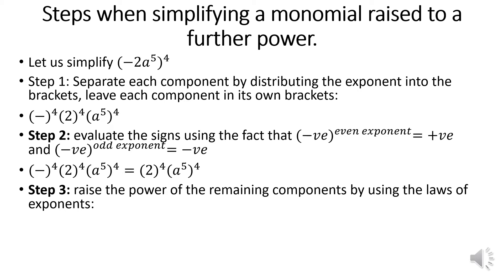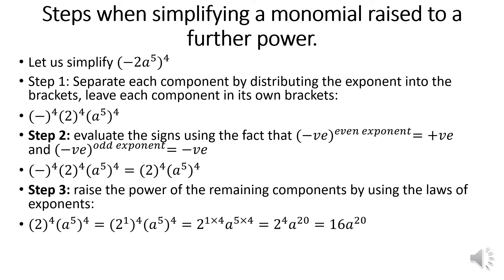Step number 3: we raise the power of the remaining components using the laws of exponents. We say 2 in brackets to the power of 4. Remember that 2 has an exponent of 1. We multiply the exponent by the exponent outside the bracket. So we raise the different components to the power of 4: 2 becomes 2⁴, and a⁵ becomes a²⁰.